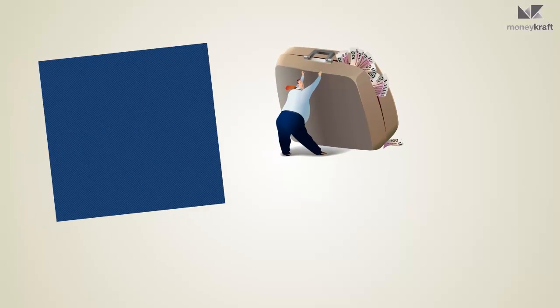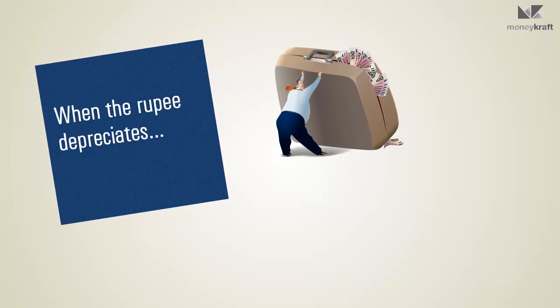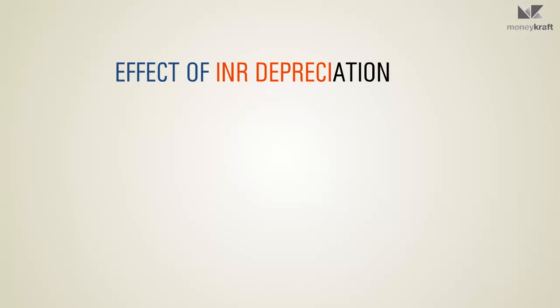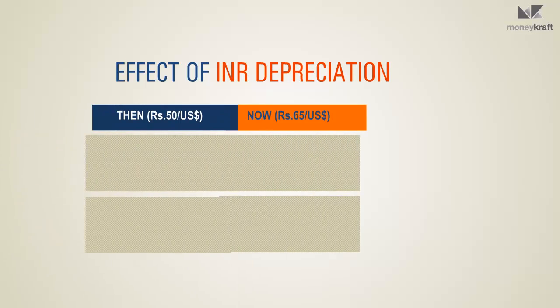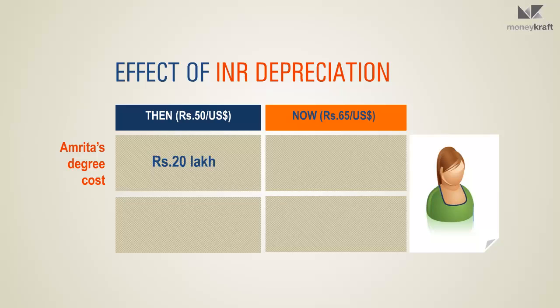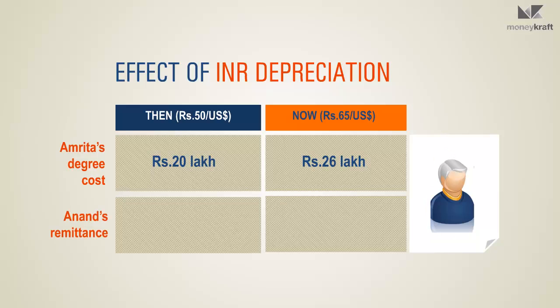Many need US dollars but earn in Indian rupees. When the rupee depreciates, they have to exchange more rupees for the dollars they need. Consider the impact of depreciation of the rupee in the examples we just discussed. Amrita's degree costs 40,000 dollars a year — she needed 20 lakh rupees earlier, and now needs 26 lakh rupees. Anand was sending 1,000 dollars a month to his son — he needed 50,000 rupees earlier, and it is now 65,000 rupees.